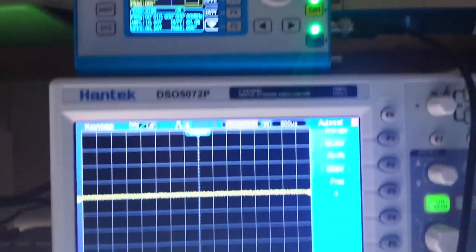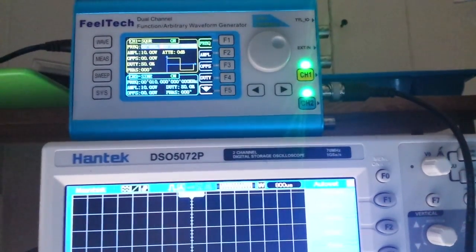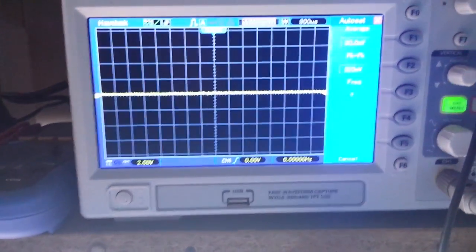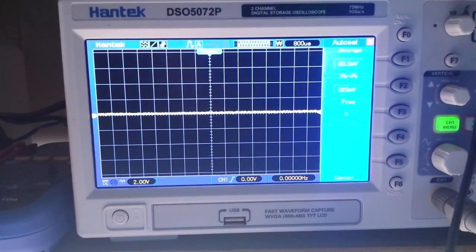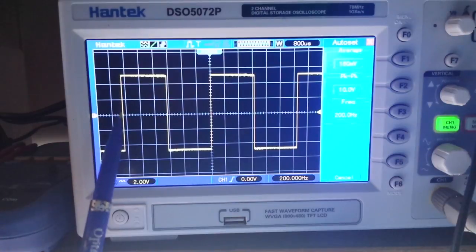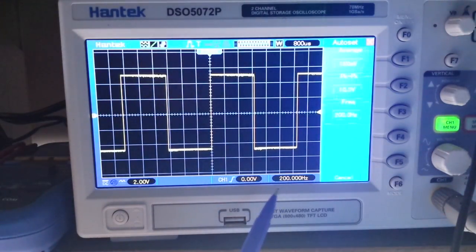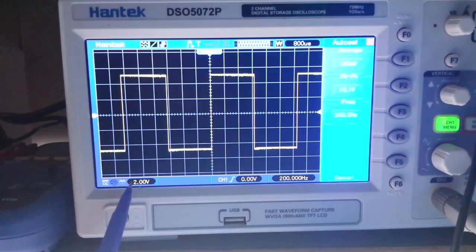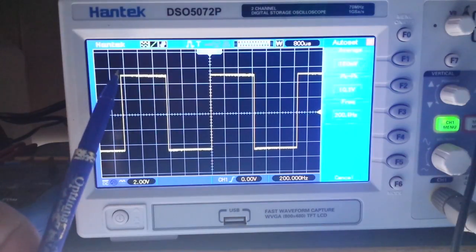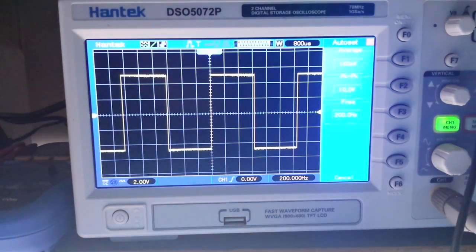Here's the scope, and right above it is the function generator which is outputting a 200 hertz square wave. I'll attach that to the scope, and you can see it right here. There is our square wave output at 200 hertz and 2 volts peak to peak. We're getting about 9 volts out of that.